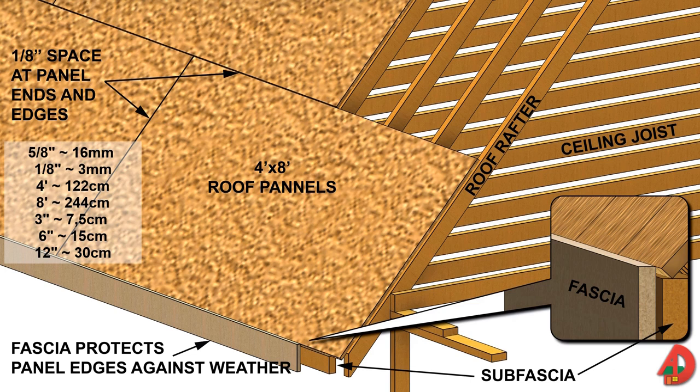Panels are placed with the long dimension parallel to the roof ridge and at a right angle to roof rafters. The first row of panels should be in a straight line, and since end joints of the panels should be staggered, start the second row with a half panel. Roof sheathing should be continuous over two or more rafters. Sheathing panels are usually 5/8 of an inch or more depending on the rafter spacing. Plywood and OSB panels are usually fastened with 8D smooth or ring-shank common nails spaced 6 inches on center along the edges and 12 inches on center at intermediate rafters.